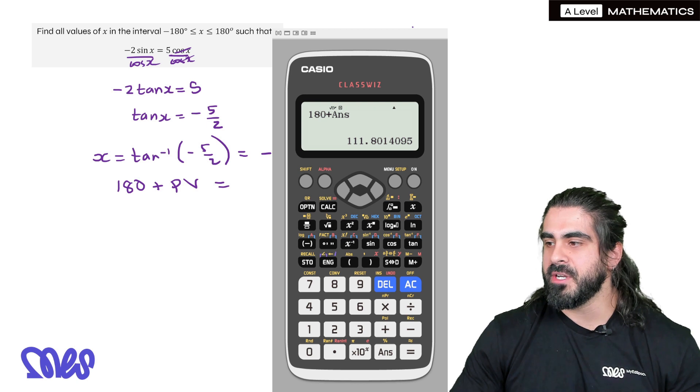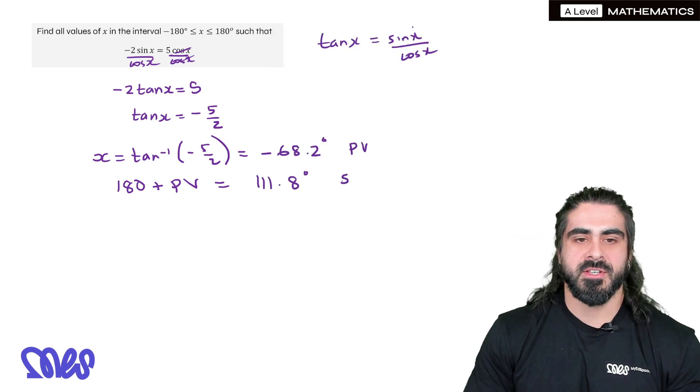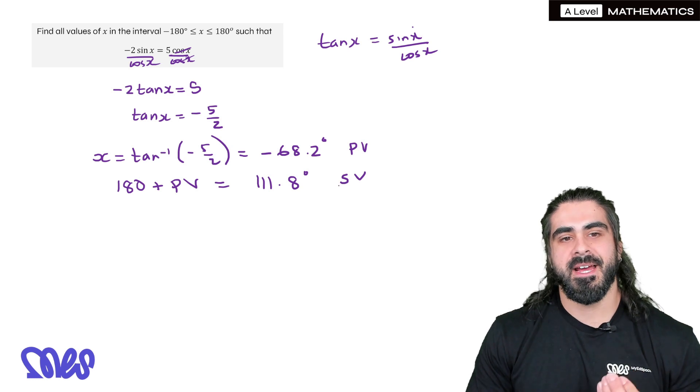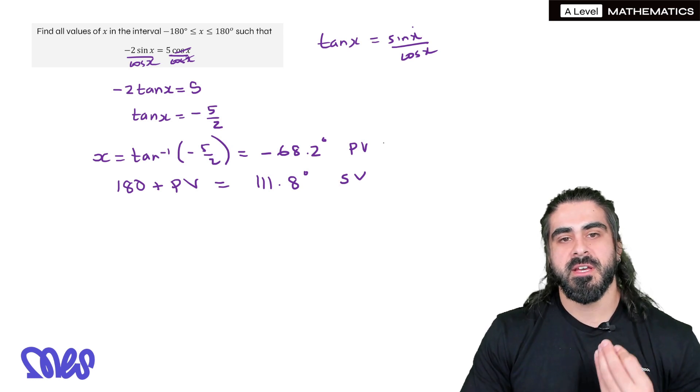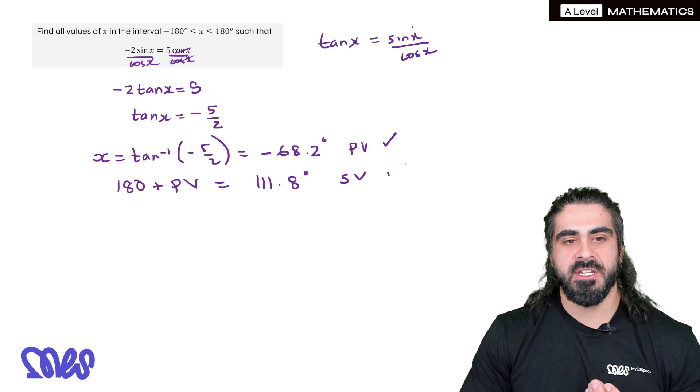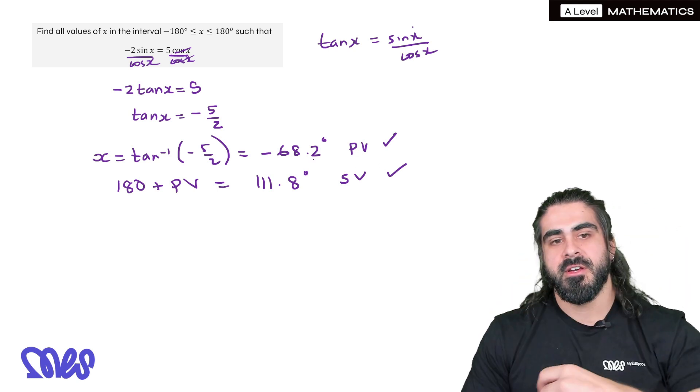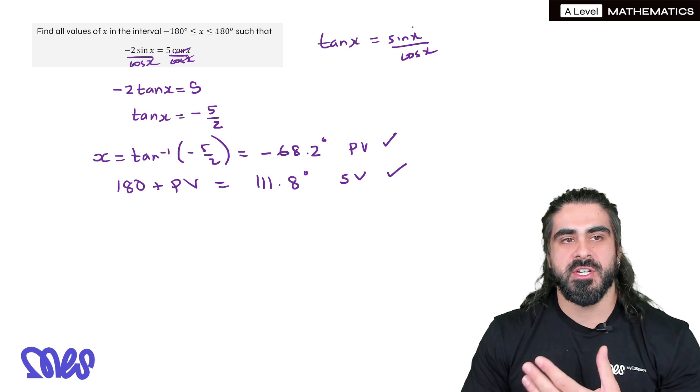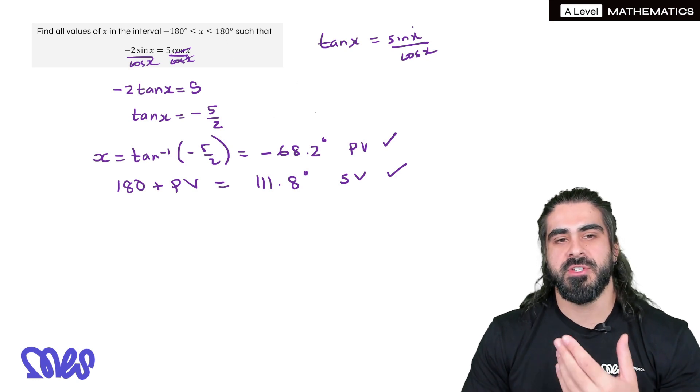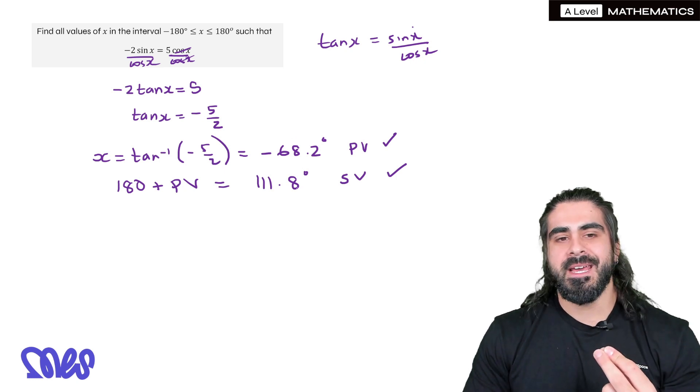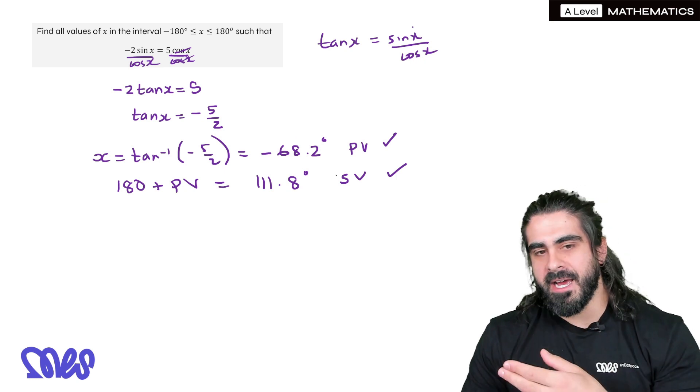How do we work out the secondary value for tan? We do 180 plus the primary value. So going back to the calculator, 180 plus the answer. So you've got 111.8. And that's our secondary value. Now the next thing you want to do is you want to decide, can you add or minus 360? Because both of these are actually in the range. Now if you take minus 68.2 and you add 360, that's going to come way out of the range. That's way bigger than 180.